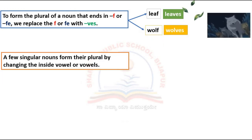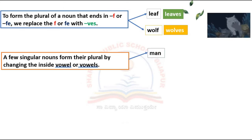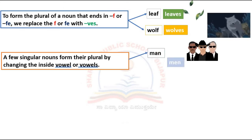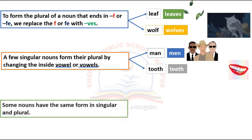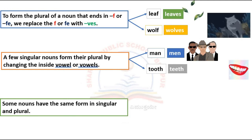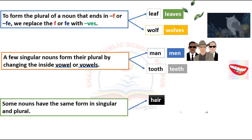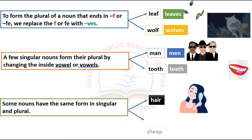A few singular nouns form their plural by changing the inside vowel or vowels. For example, man becomes men, tooth becomes teeth. Some nouns have the same form in both singular and plural, such as hair and sheep.